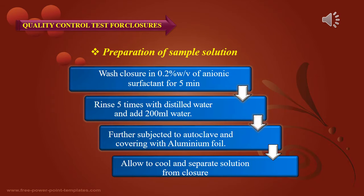This is the procedure for preparation of sample solution before going on to quality control tests for closures. First, wash closures in 0.2% w/v solution of anionic surfactant for 5 minutes. Then rinse 5 times with distilled water. Add 200 ml water, subject to autoclave covering with aluminium foil, allow to cool, and separate the solution from the closure.